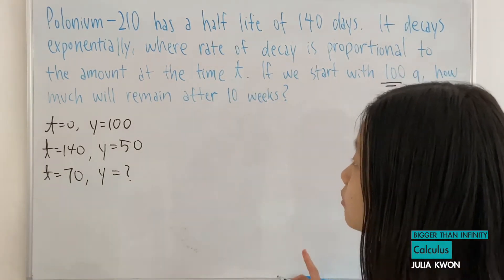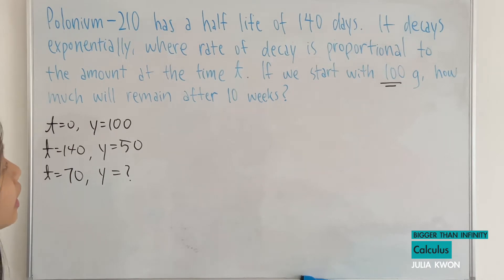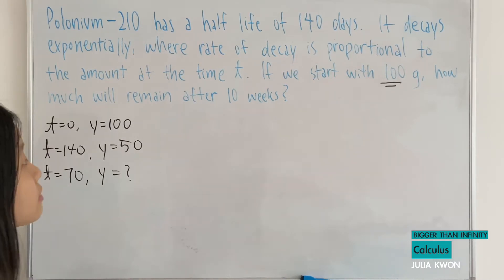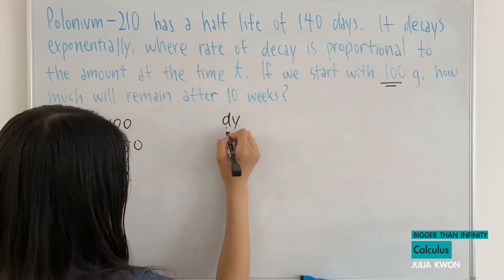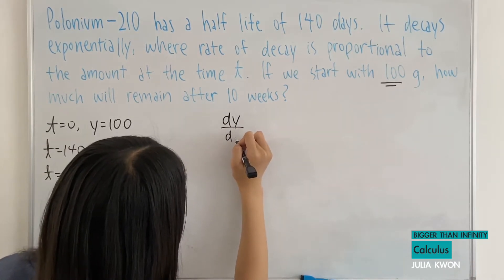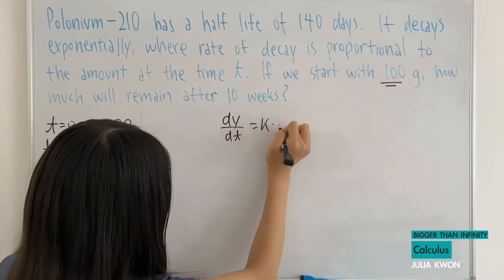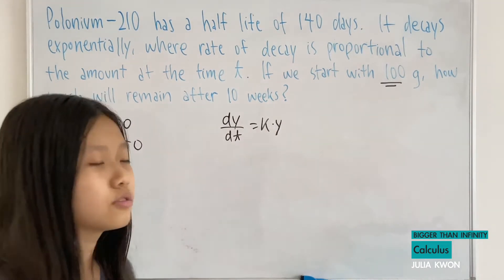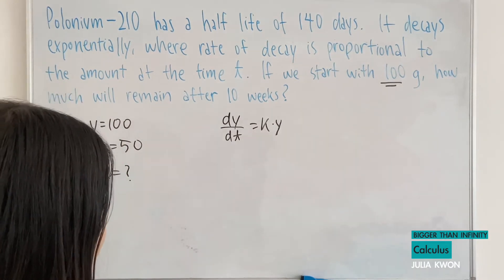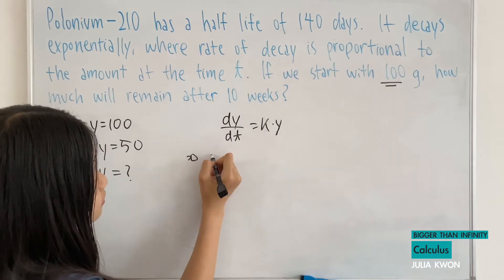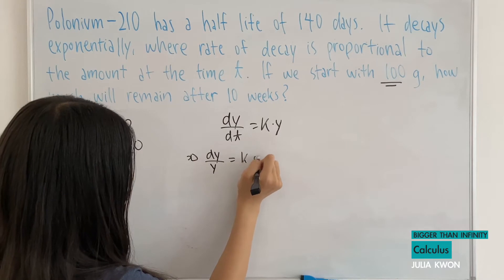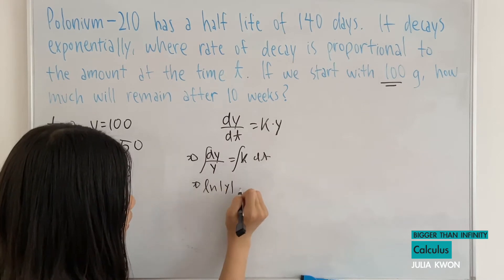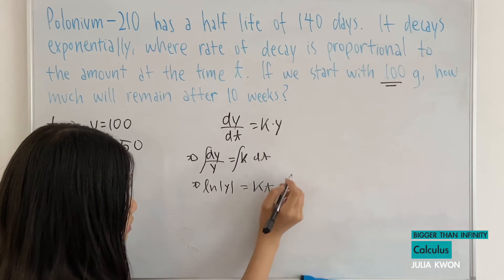It decays exponentially, and the rate of decay is proportional to the amount at the time t. That tells us that we can write dy over dt is equal to k multiplied by y. It's a differential equation. We can divide y on each side and multiply dt on both sides. And then take the integral, which will give us the ln of absolute value of y is equal to k multiplied by t plus c.